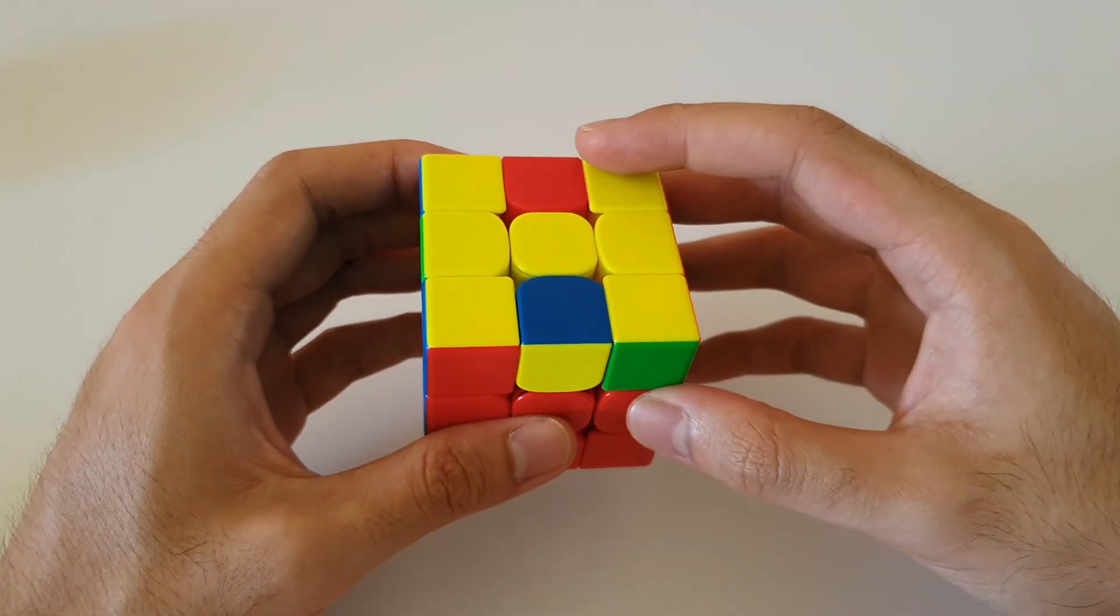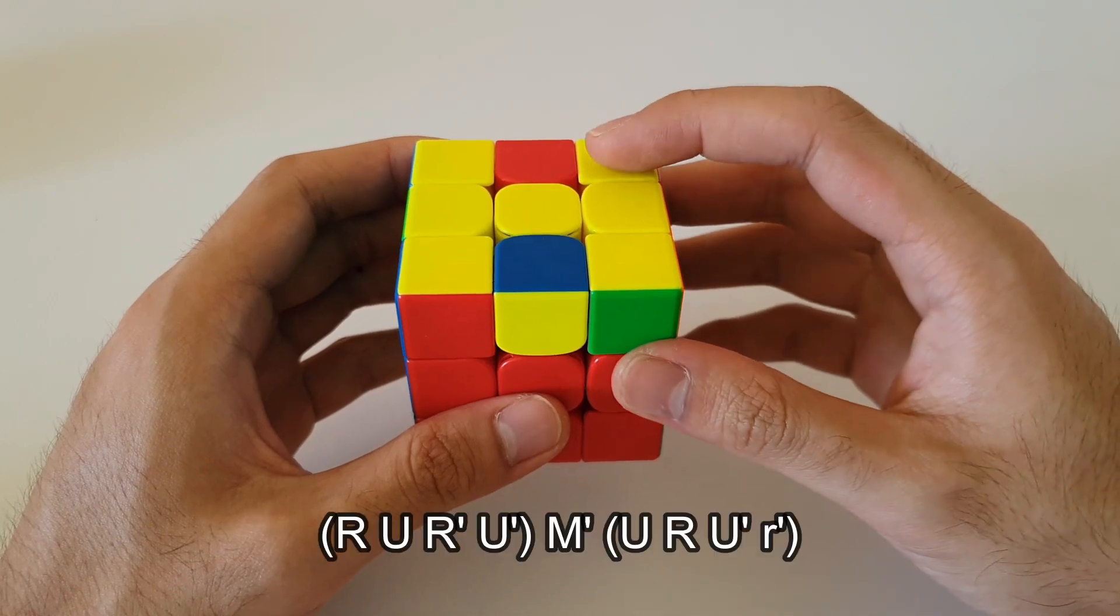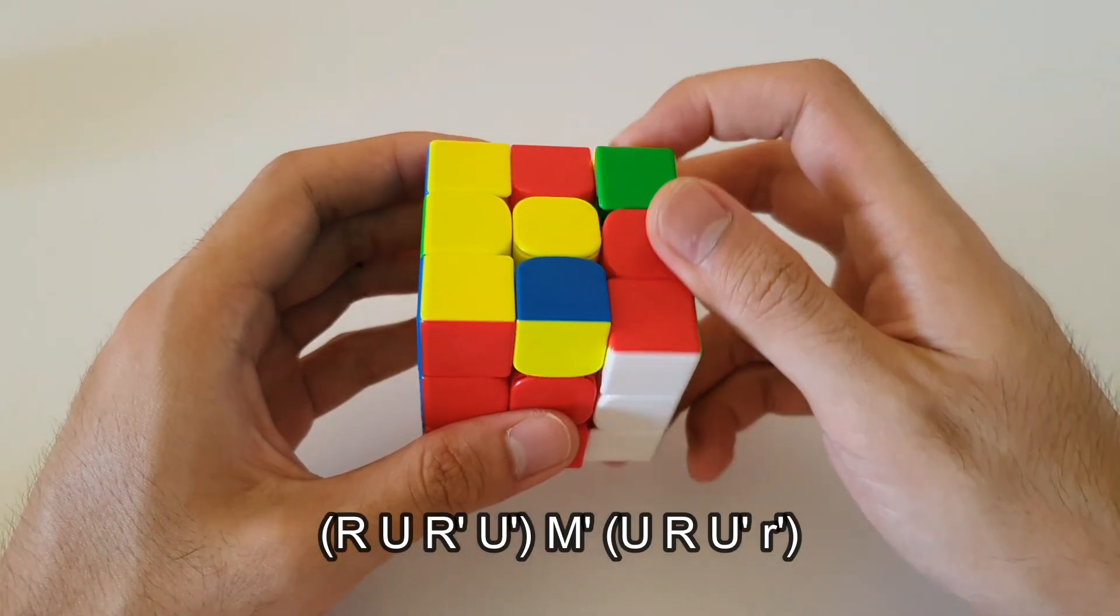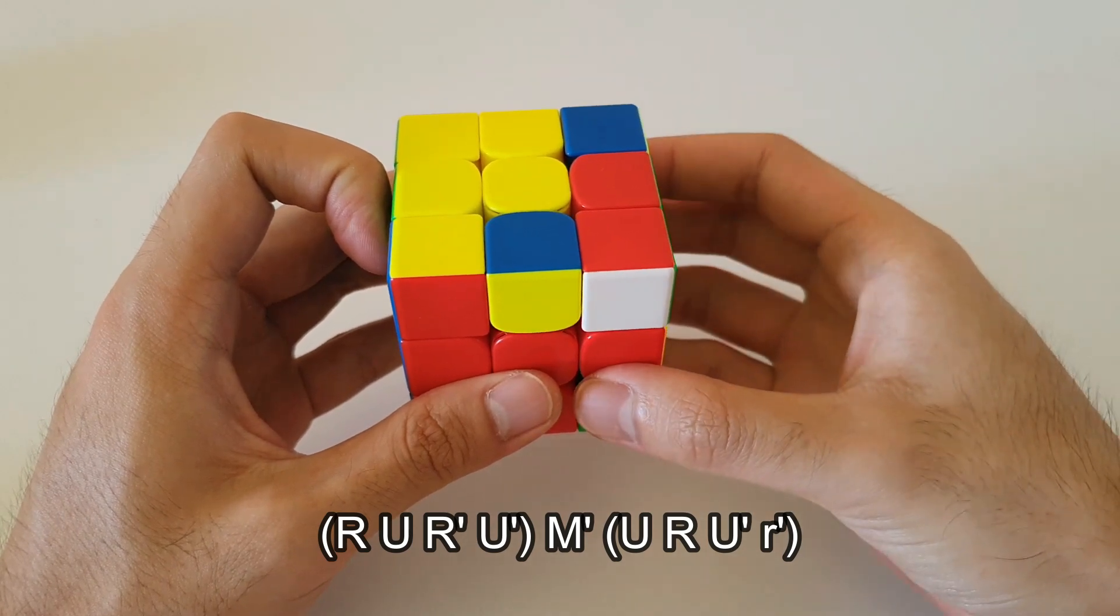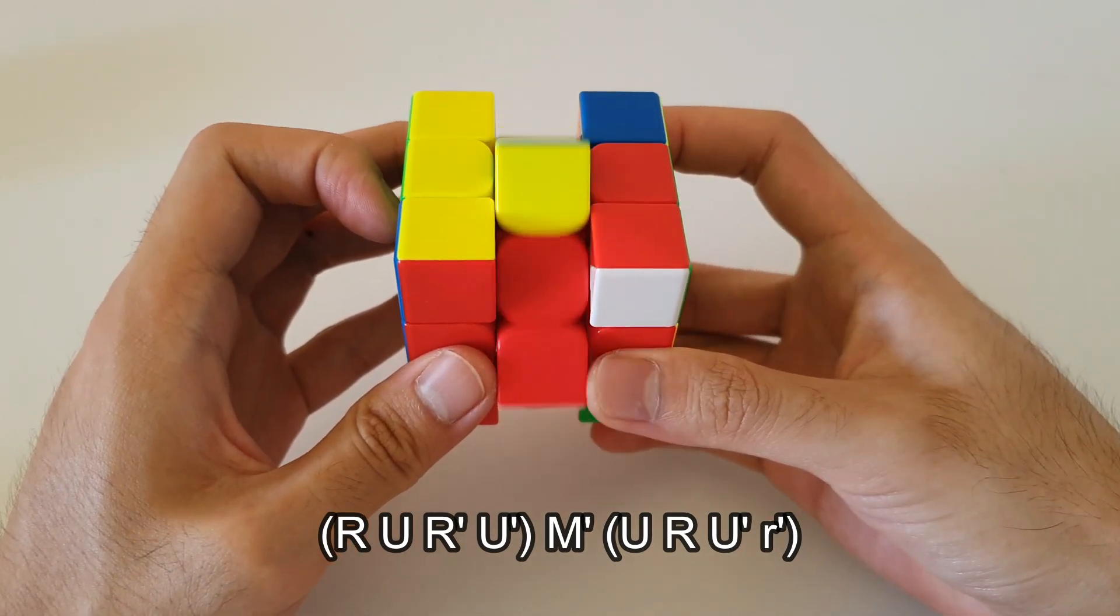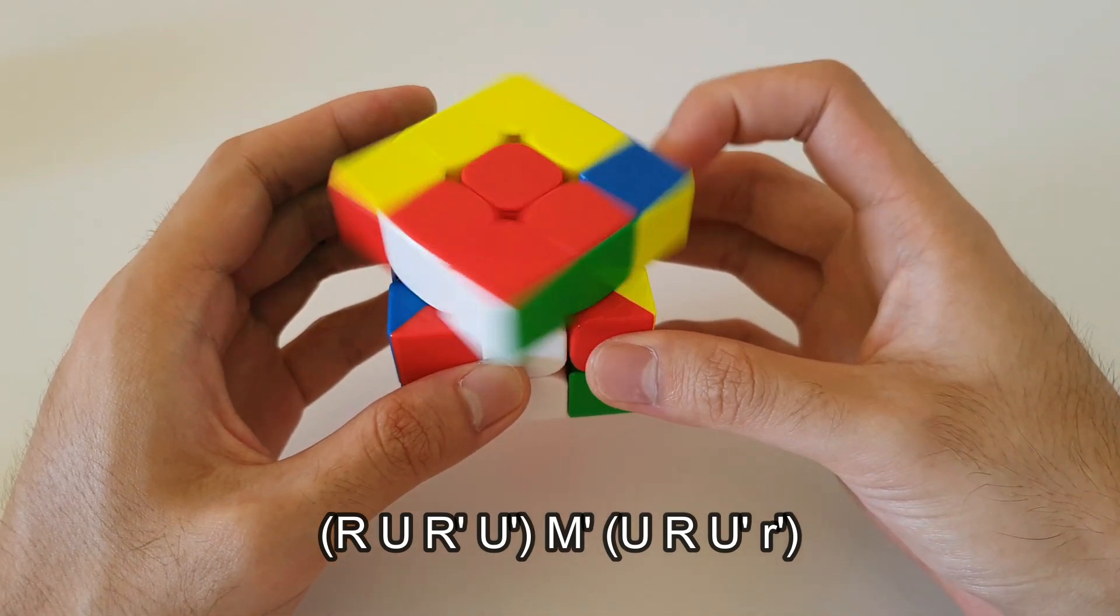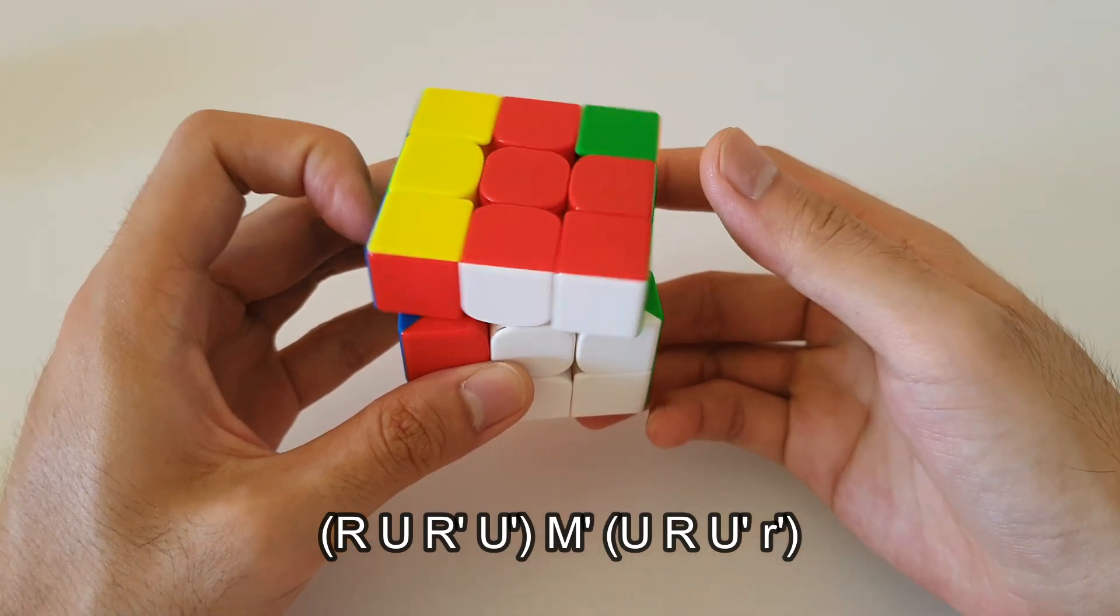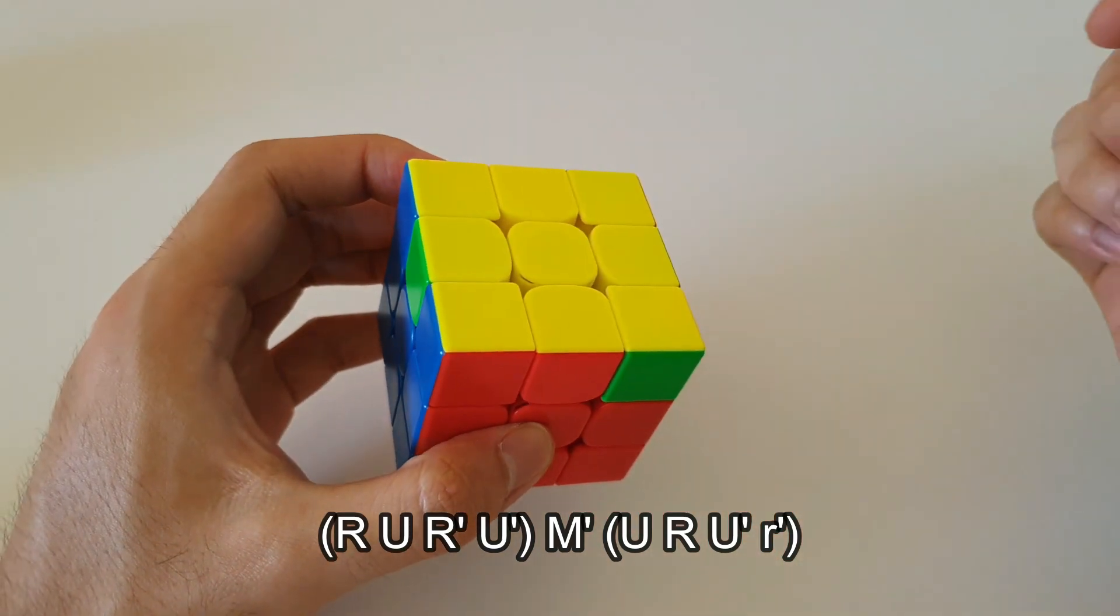For this algorithm, it's actually very similar compared to the previous one. It starts off with a regular sexy. Following that, you want to do an M', so middle layer upwards like this. Now you want to do a reverse sexy, but the last move is a wide R' like this. And that solves that OLL case.